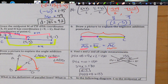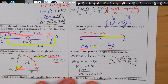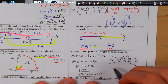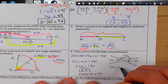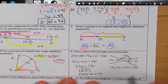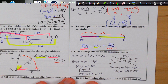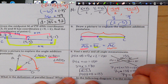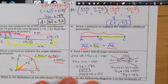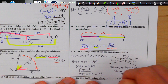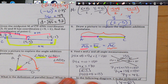Now finding the next angle with Y: 7y + 5 + 133 = 180. Combining: 7y + 138 = 180, so 7y = 42, giving y = 6.